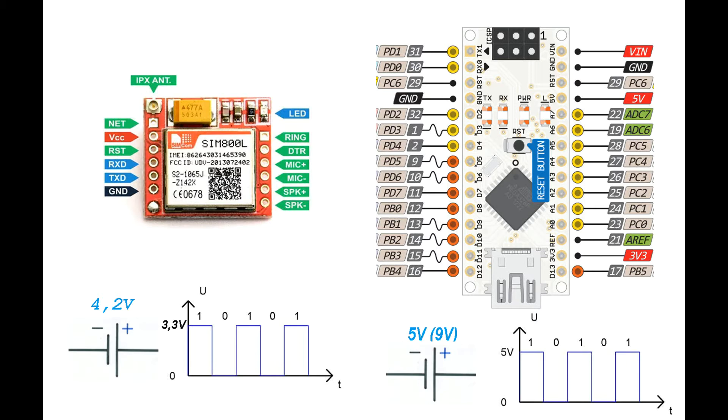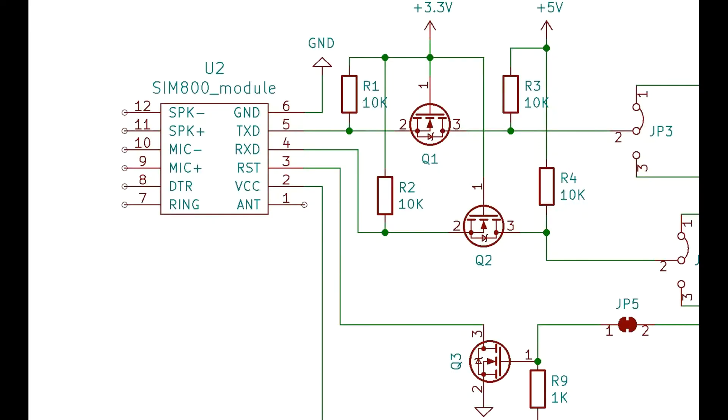To provide 4.2V power, you need to use a separate voltage regulator. And to match the logical levels of 3.3V and 5V, a level converter is needed. You can find schemes with these two modules in large numbers on the internet.